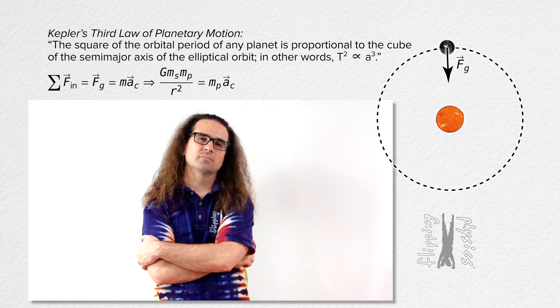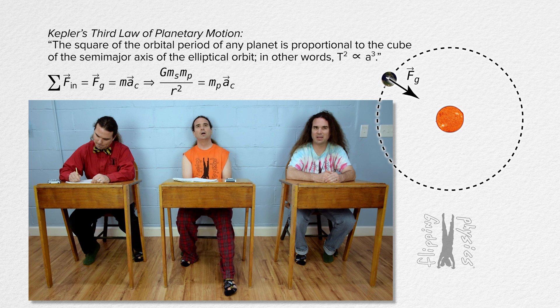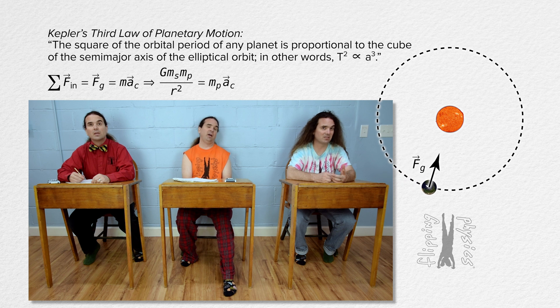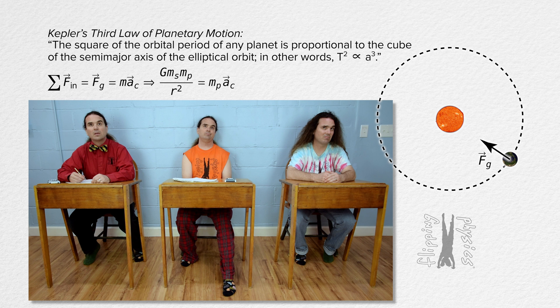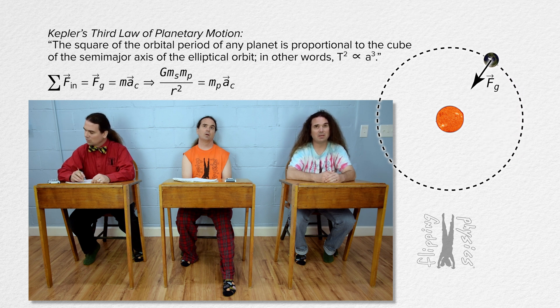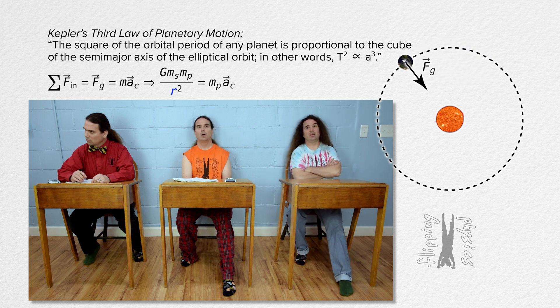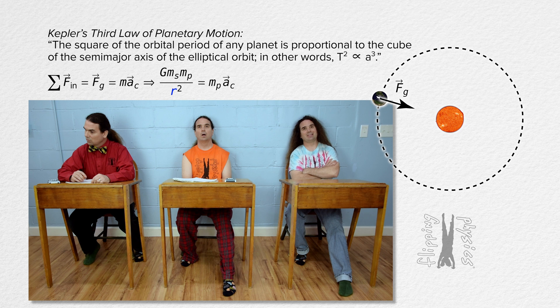Are we assuming the Sun's mass is so much larger than the planet's mass that the planet orbits around the Sun, the center of mass of the Sun, and not the center of mass of the Sun-planet system? Yes, Bo, it is reasonable to assume all the planets revolve around the center of mass of the Sun. Makes sense. That means the variable r in the force of gravity equation is the radius of the orbit of the planet in this case.